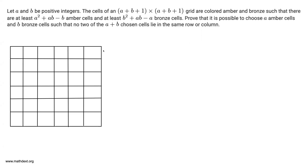Let A and B be positive integers. The cells of an A+B+1 by A+B+1 grid are colored amber and bronze such that there are at least A²+AB-B amber cells and at least B²+AB-A bronze cells. Prove that it is possible to choose A amber cells and B bronze cells such that no two of the A+B chosen cells lie in the same row or column.